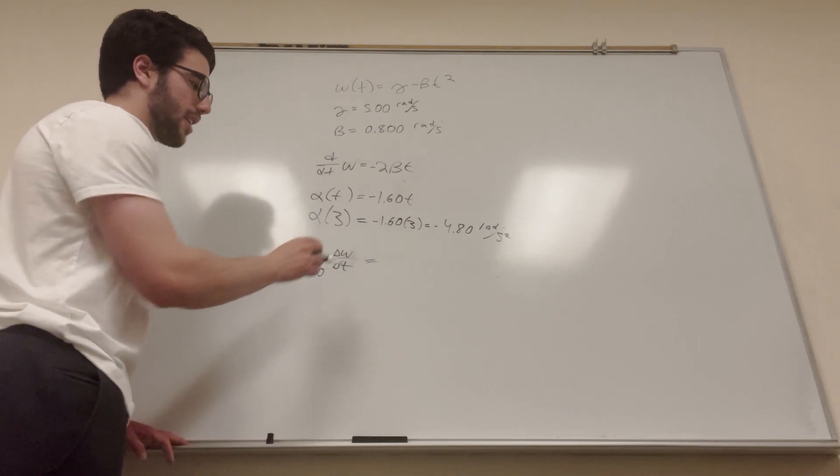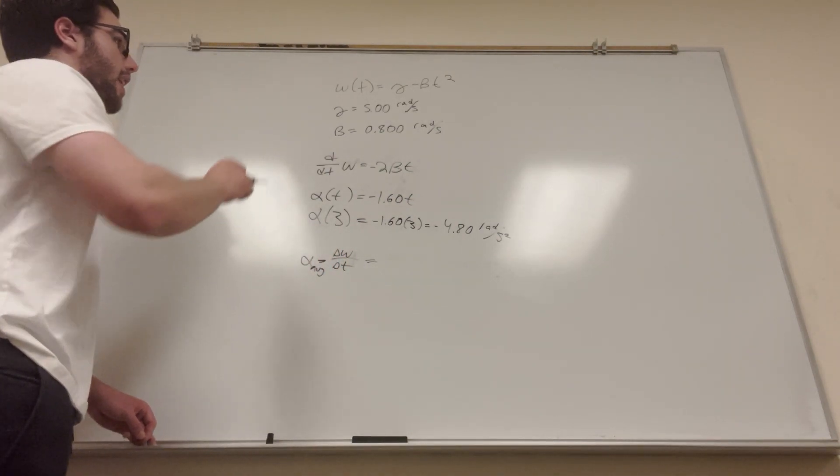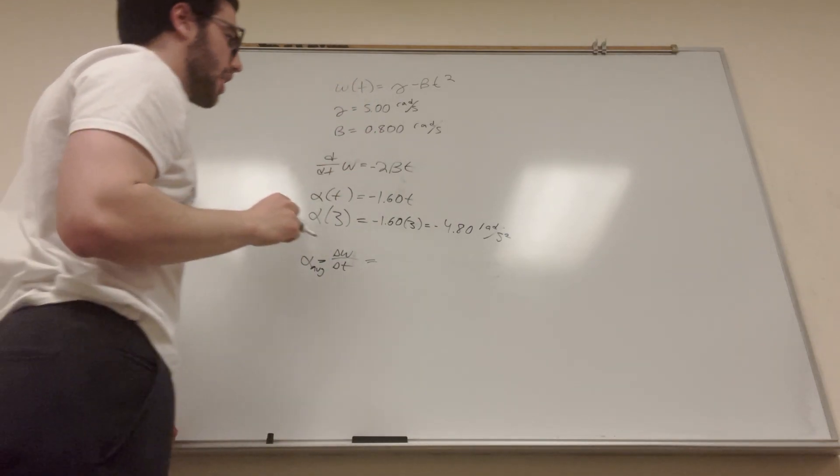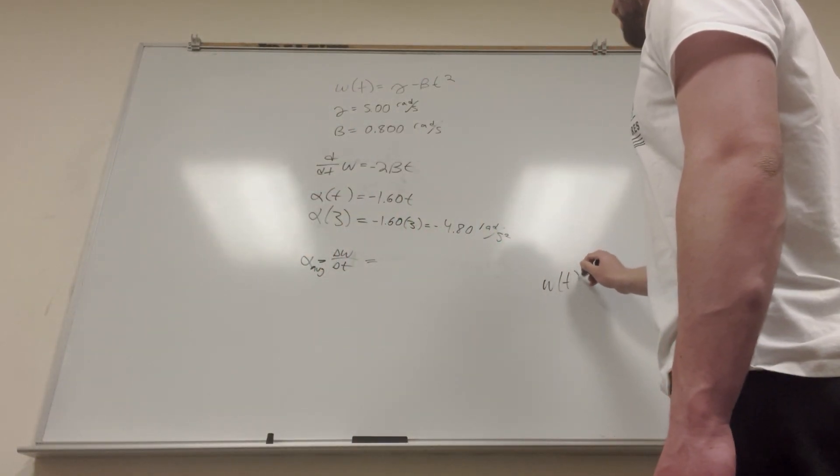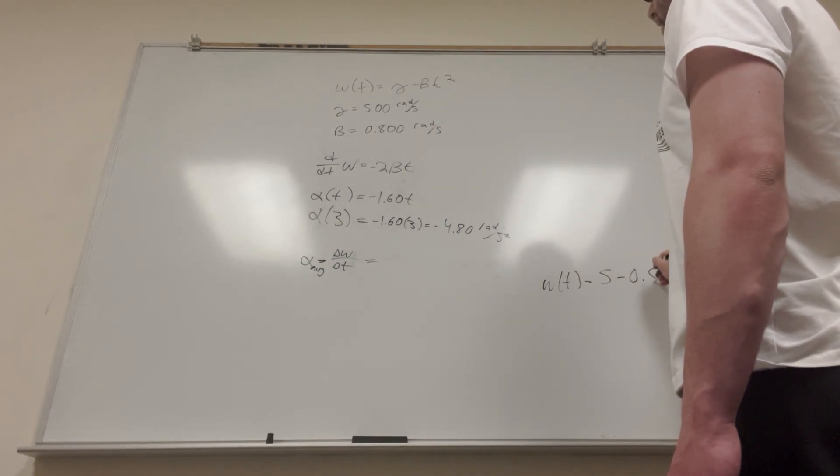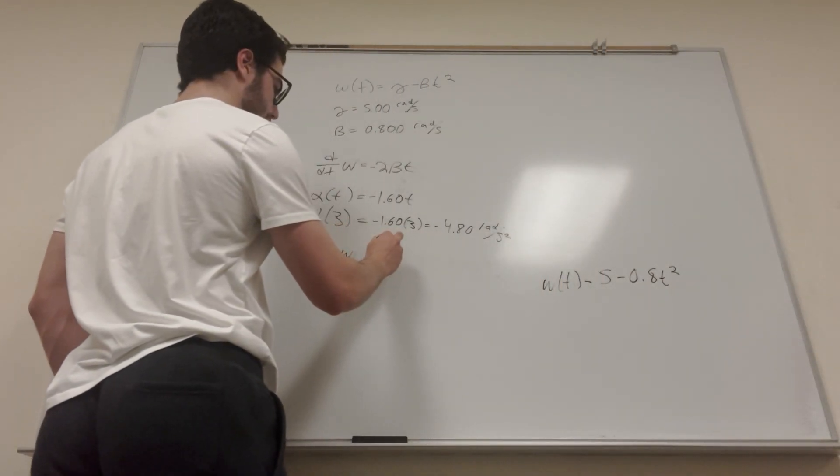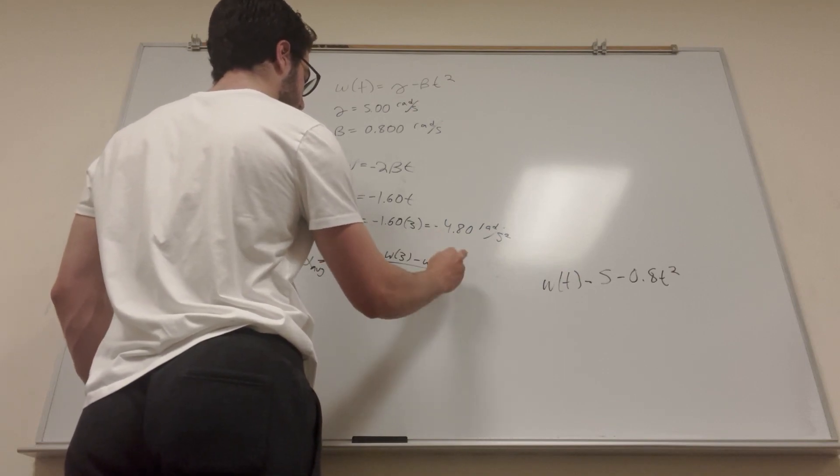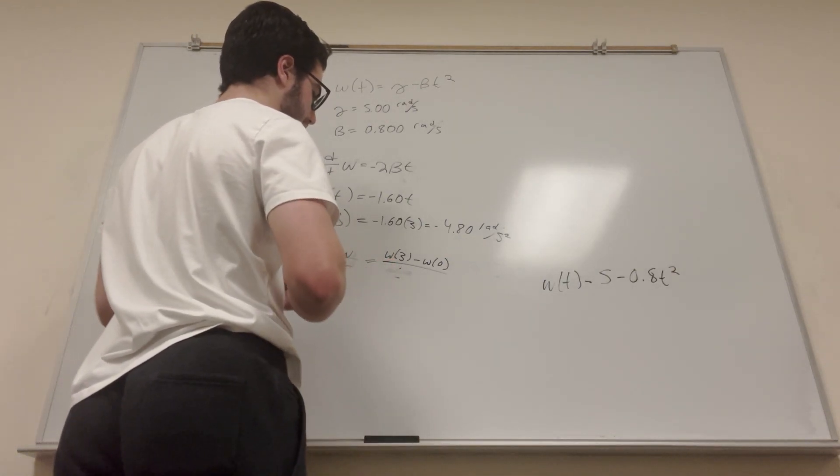So what this is going to be is final minus initial. So let's go ahead and calculate final. So what we want to do to calculate final is plug in our constants to this equation. So we know that ω of t is equal to, so gamma is equal to 5, 5 minus 0.8t squared. So this is going to be ω at time equal to 3 minus ω at time equal to 0 over 3, or t final minus t initial, which is going to be 3 minus 0.